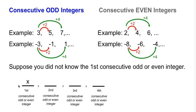So without using another new variable, how would you write an algebraic expression to represent the second consecutive odd or even integer if the first one is x?